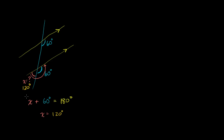You could actually figure out every angle formed between the transversal and the parallel lines. If this is 120 degrees, then the angle opposite to it is also 120 degrees. If this angle is 60 degrees, then this one right here is also 60 degrees. If this is 60, then its opposite angle is 60 degrees. You could say this has to be supplementary to a 60 degree angle, or that this angle corresponds to 120 degrees — so it is also 120. This angle is the same as this angle, so it is also 120 degrees.